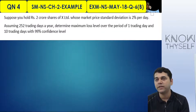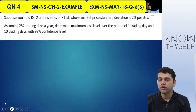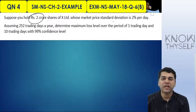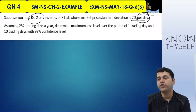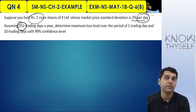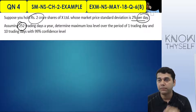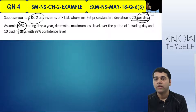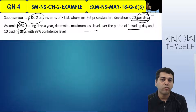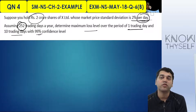Next study material question: you hold 2 crore rupees of shares in X Limited, whose market price standard deviation is 2% per day. Assuming 252 trading days — they have told you specifically, so I have to take 252 — determine the maximum loss over the period of one trading day and 10 trading days with 99% confidence level. Note: since the standard deviation is given per day already, the 252 days figure may not be needed for the daily calculation.